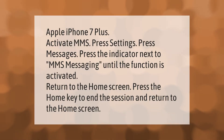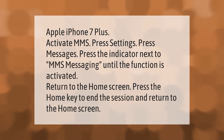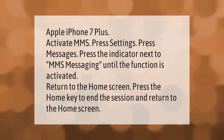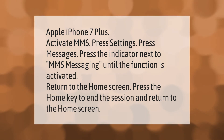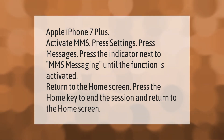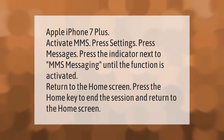Apple iPhone 7 Plus — activate MMS: press Settings, press Messages, press the indicator next to MMS Messaging until the function is activated, then press the Home key to end the session and return to the home screen.